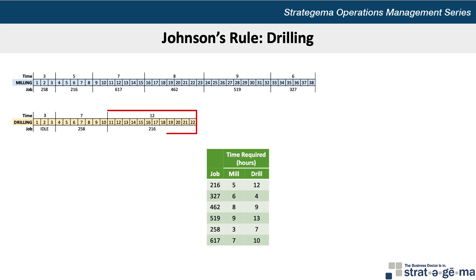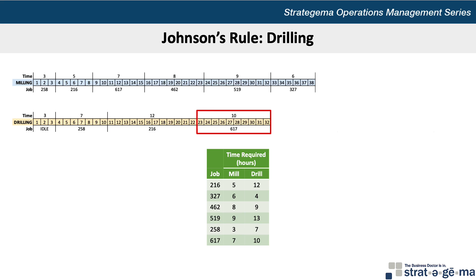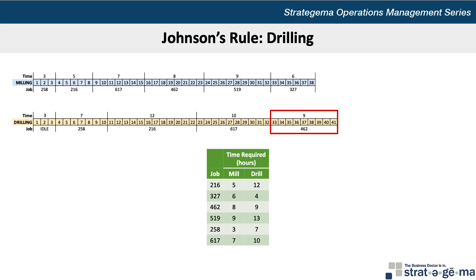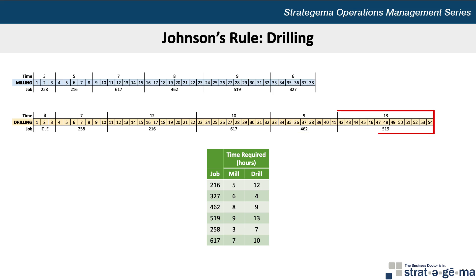Job 216 can start right after 258 at the beginning of the 11th hour, takes 12 hours to complete, and will finish at the end of hour 22. Job 617 can start right after 216 at the beginning of the 23rd hour, takes 10 hours to complete, and will finish at the end of hour 32. Job 462 can start right after 617 at the beginning of the 33rd hour, takes 9 hours to complete, and will finish at the end of hour 41. Job 519 can start right after 462 at the beginning of the 42nd hour, takes 13 hours to complete, and will finish at the end of hour 54.